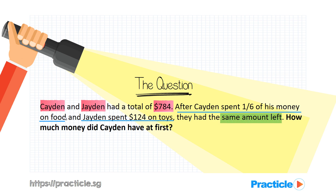And they ended up with the same amount of money. So we can think of this question as a before-and-after comparison — comparing how much they had before they spent their money and how much they had after. Since a fraction is involved, I would suggest drawing a model to help us see what is going on.